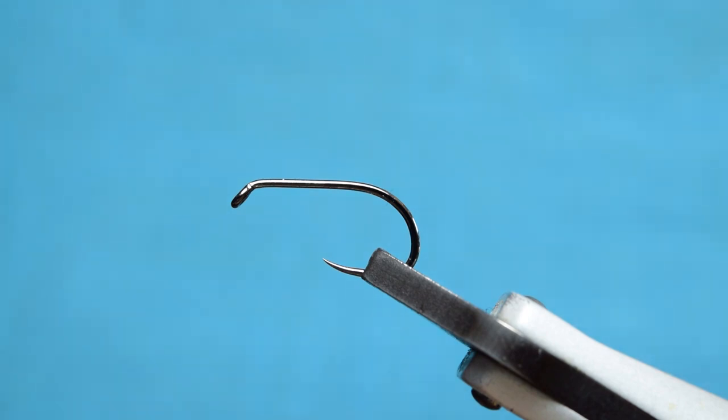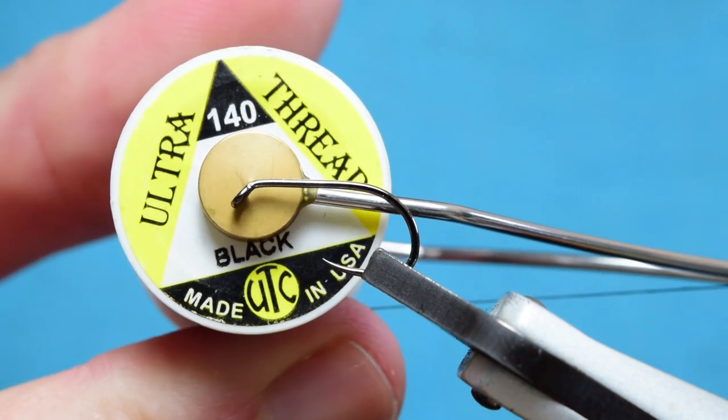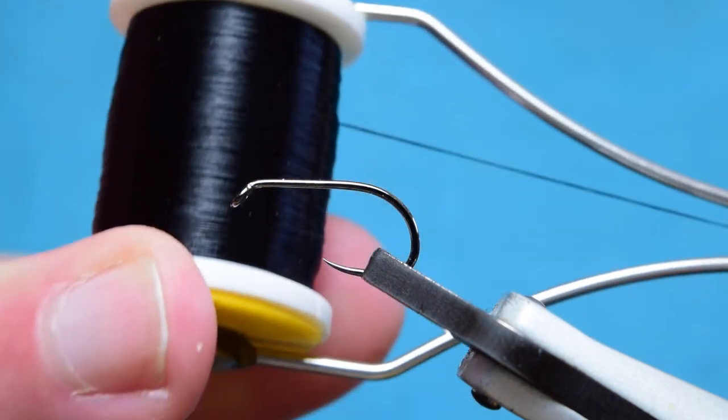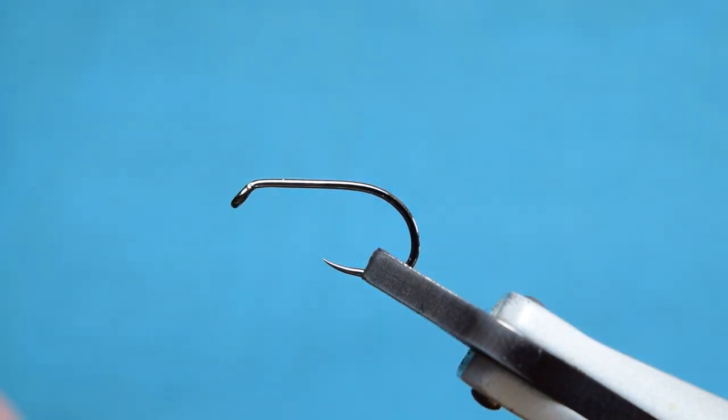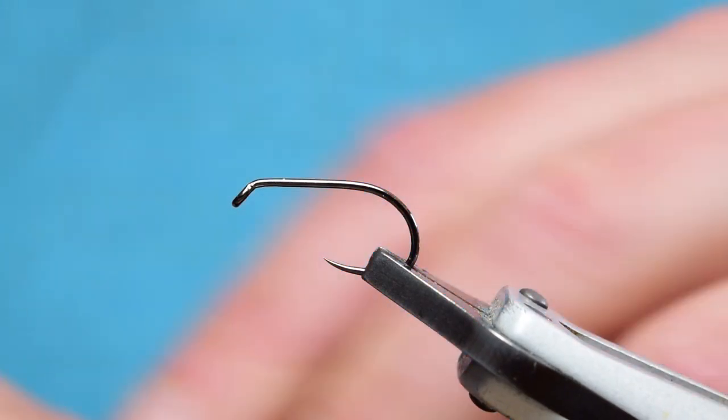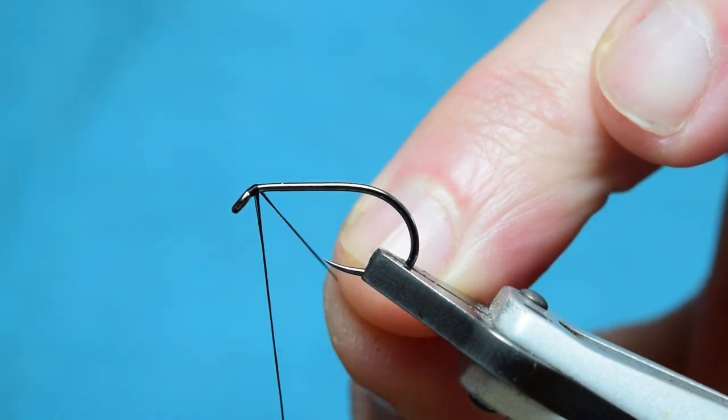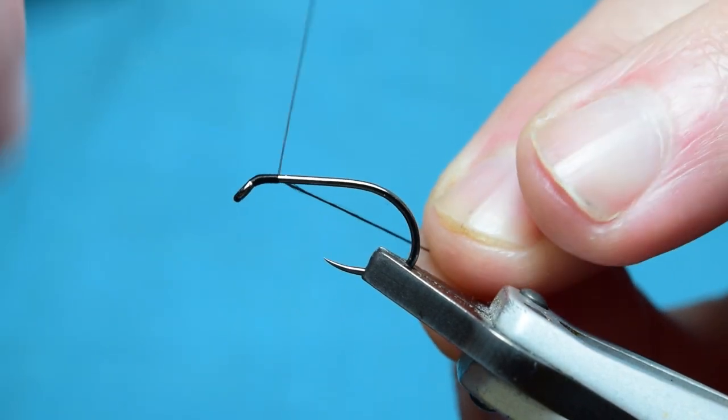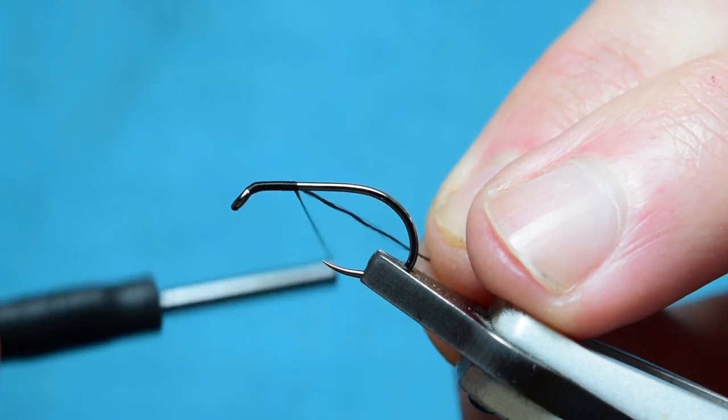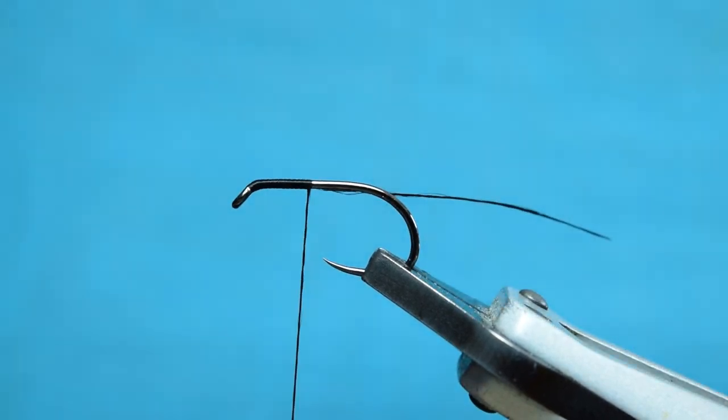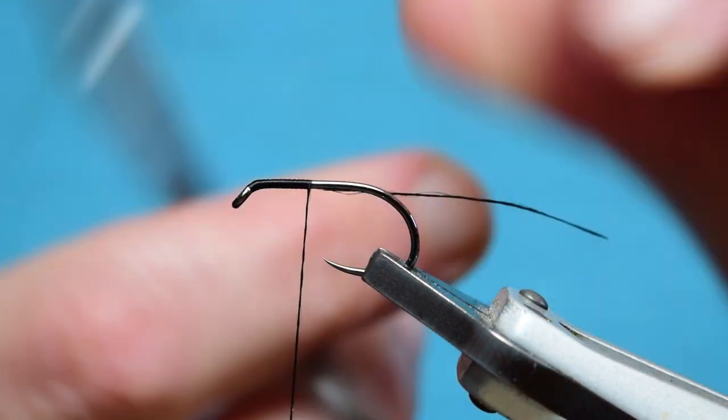The thread I'm using for this fly is going to be some UTC in 140 denier in black. Very simple buzzer this one. What we're going to do is start the thread at the eye and we're just going to work our way down with this thread towards the back. I'm just going to trim off this excess here.